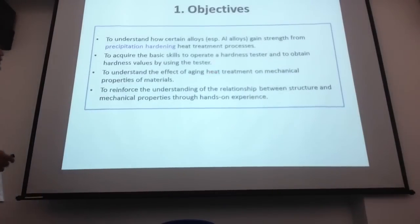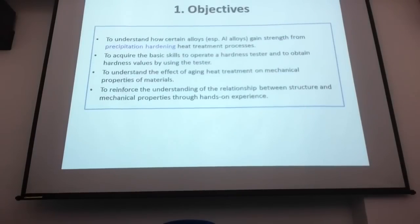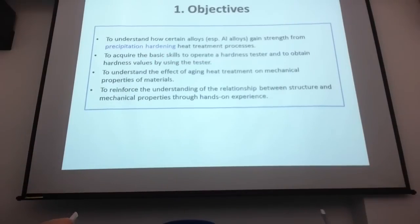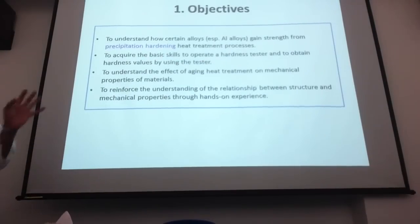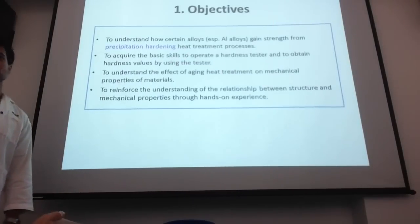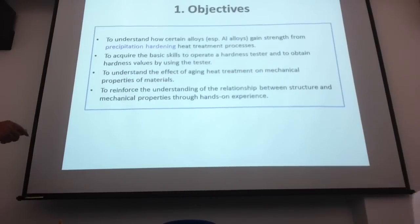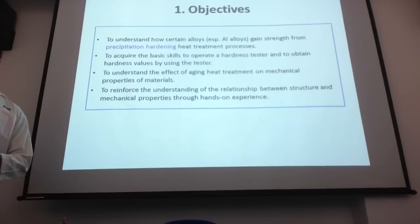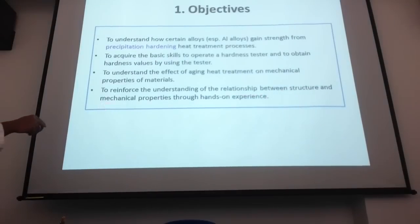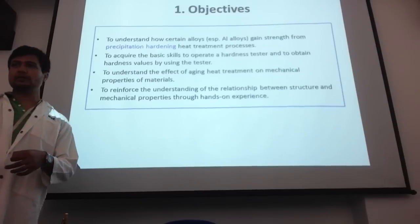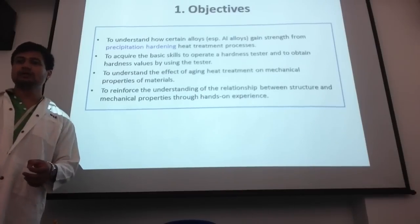Today's objectives are: first, to understand how certain alloys, especially aluminum alloys, become stronger when you perform the precipitation hardening heat treatment process. Second, you will acquire the basic skills to operate a hardness tester, measuring hardness of samples which have undergone precipitation hardening. Third, to understand the effect of aging heat treatment on mechanical properties — aging heat treatment is the same as precipitation hardening. Fourth, to reinforce understanding of the structure-mechanical properties relationship: what is actually going on inside the material that makes it stronger or harder.